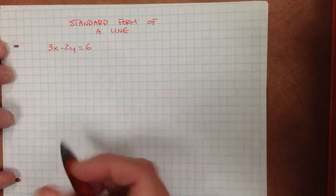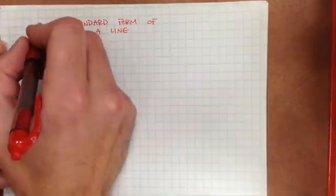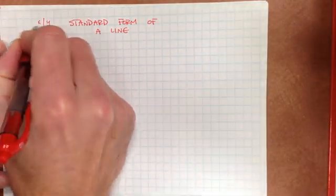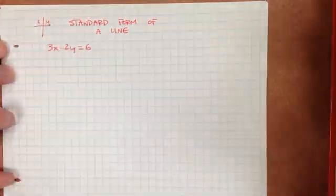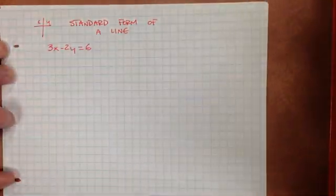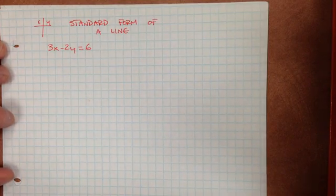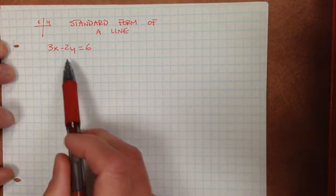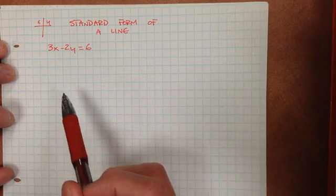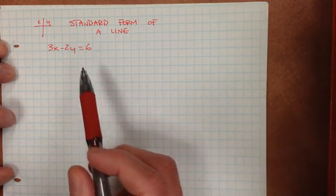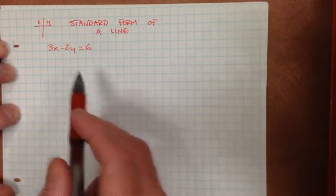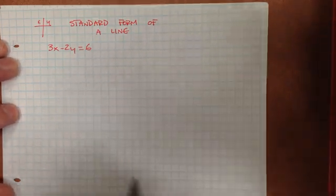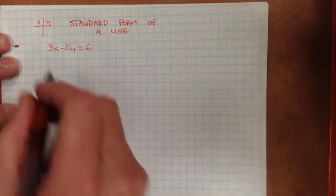One way to graph this, or graph anything really, would be to create an x-y table. You could create an x-y table to get your points and then graph them. Or you could take this and change its form to put it into y-intercept form — basically just solve that thing for y.